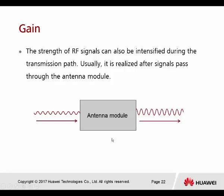Then there is gain. The strength of a radio frequency signal can also intensify during the transmission path, usually realized after the signal passes through an antenna module. If the cable is too long and weakens the signal, antenna modules can provide gain to strengthen it back.